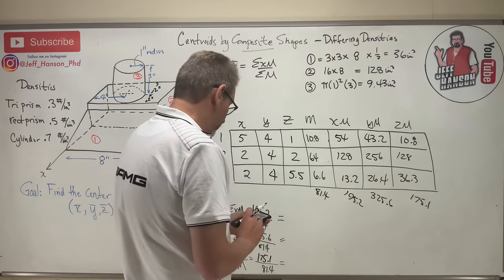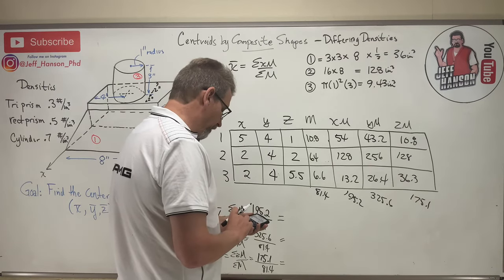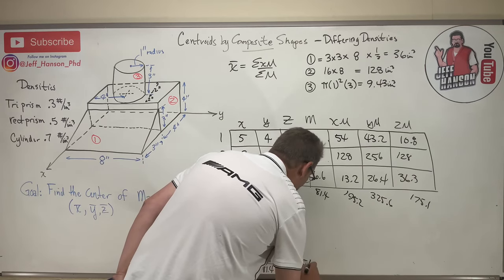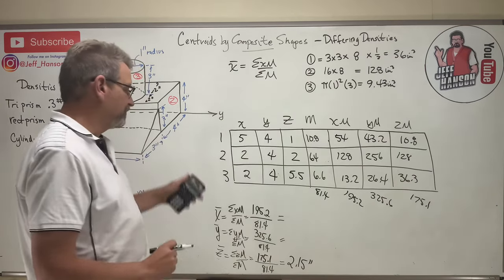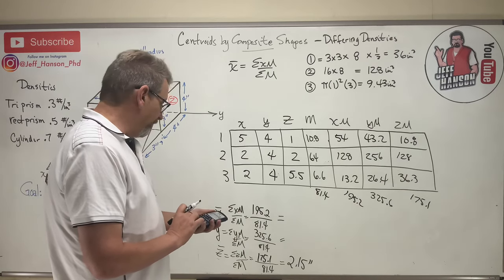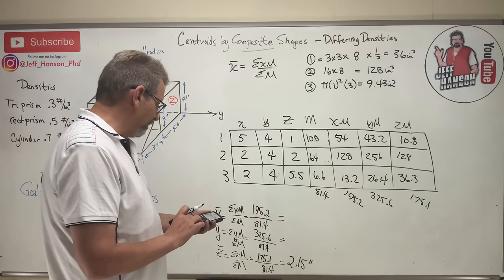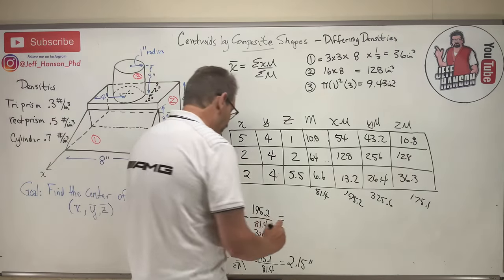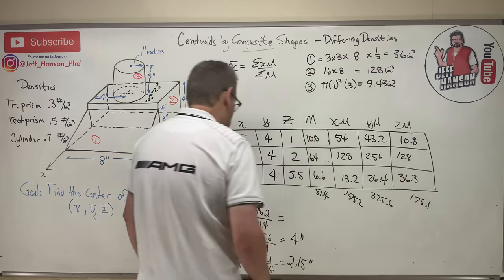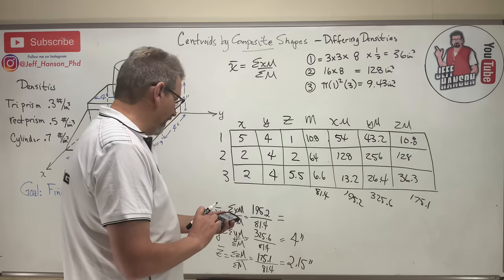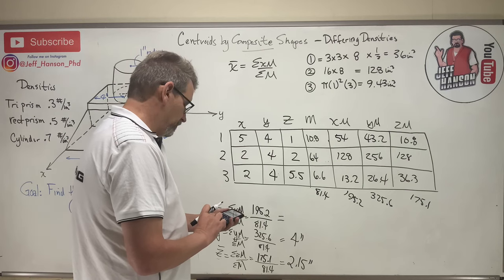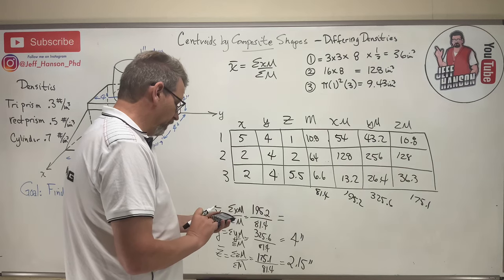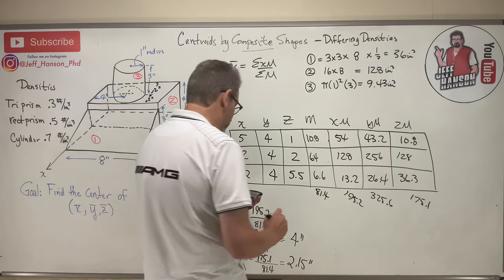Now here we go. Divided by 81.4, that's 2.15. These are all in inches. 325.6 divided by 81.4, that's four even. And then the last one, 195.2 divided by 81.4 is 2.40.